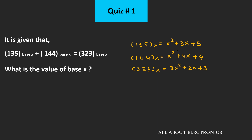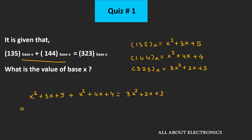This is the decimal equivalent of all these three numbers. From this, we can say that x² plus 3x plus 5 plus x² plus 4x plus 4 is equal to 3x² plus 2x plus 3. And if we simplify it, then we can say that 2x² plus 7x plus 9 is equal to 3x² plus 2x plus 3.